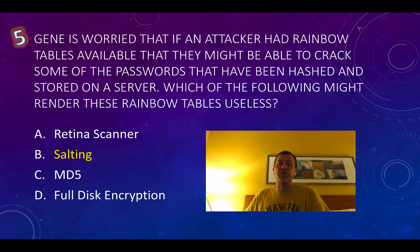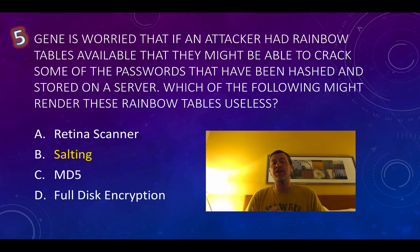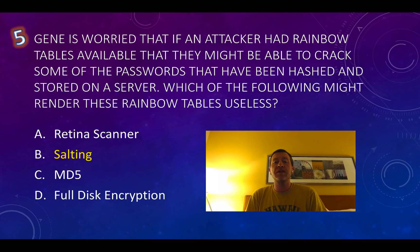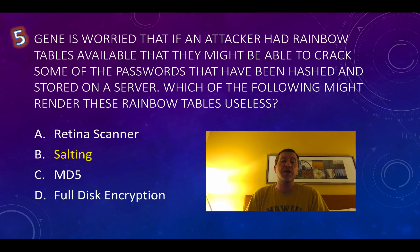Gene is worried that if an attacker had rainbow tables available, they might be able to crack some of the passwords that have been hashed and stored on a server. Which of the following might render these rainbow tables useless? Rainbow tables are essentially like a spreadsheet where one column contains all the hashes and another contains all the clear text. If we add extra characters or information to the password before running it through the hashing algorithm, it renders that rainbow table useless. A retina scanner, MD5, or full disk encryption won't help here — but salting the passwords before running them through the hashing algorithm certainly would.